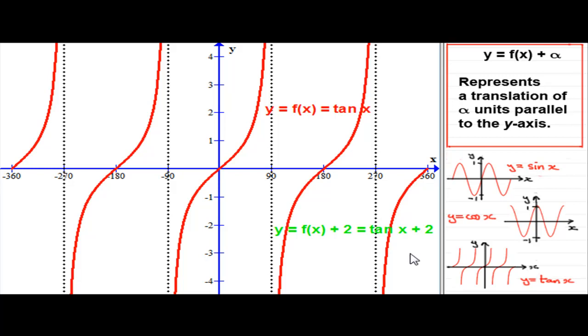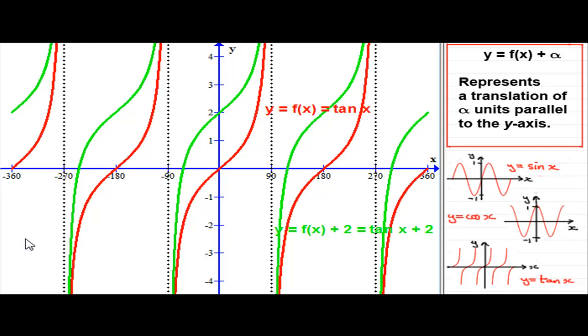Let's just see how you got on. You should have, basically, a graph like this. What happens is that the original graph of y equals tan x just gets shifted up by 2 units. Our alpha value on the end here is 2, so we just push it up 2 units parallel to y axis.